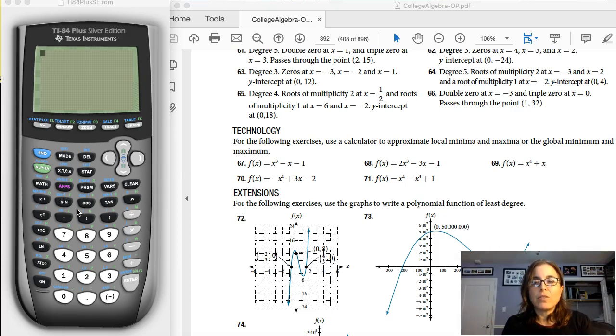So for number 69, it says use your calculator to approximate the local maxes and mins, or the global maxes and mins, and it looks like I've got a quartic here.